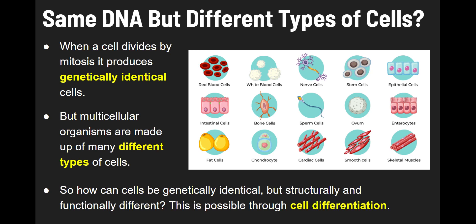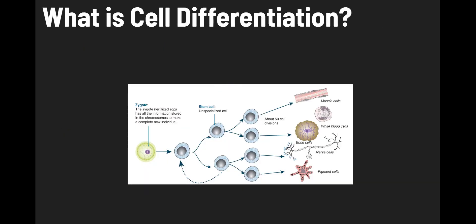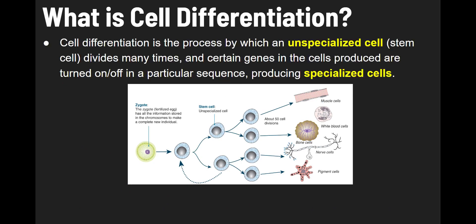This is possible through cell differentiation. Cell differentiation is the process by which an unspecialized cell, called a stem cell, divides many times, and certain genes in the cells that are produced are turned on or off. Those genes get turned on or off in a particular sequence, and this produces specialized cells. So we're going from unspecialized cells to specialized cells by turning genes on or off in a particular sequence.